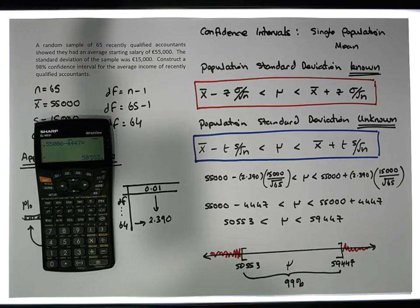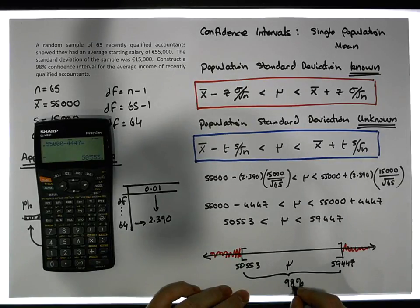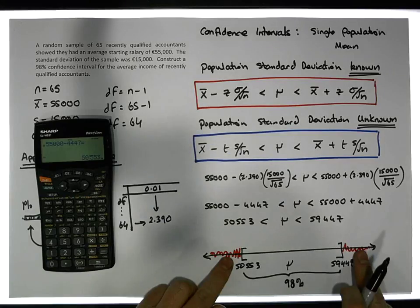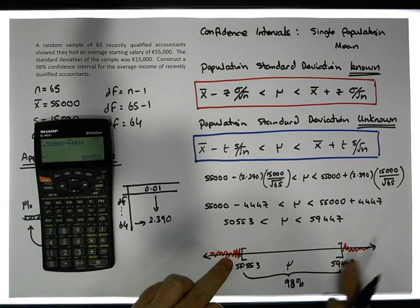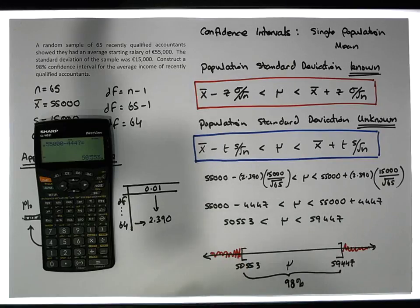This is a 98 percent interval, so we'd expect to find it in these tails two percent of the time, but we'd expect to find it between these two values 98 percent of the time.